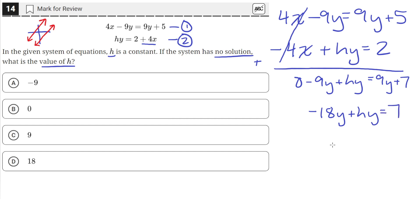So now we need to change this equation such that we get an equation that's not true. So we need to somehow cancel out the y's here.